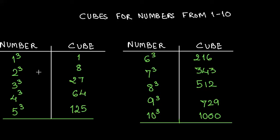So here we have 1 cube is 1, 2's cube which means 2 times 2 times 2 is 8, 3 cube is 27 that is 3 times 3 times 3 is 27, 4 cube that is 4 times 4 times 4 is 64.